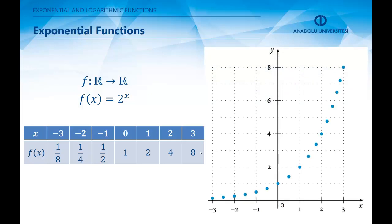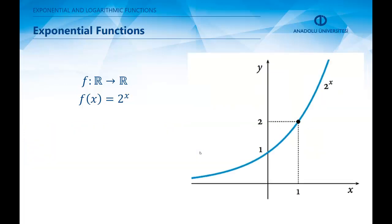For negative exponents, like x = -1, -2, and -3, we see that the function's value approaches 0. If we now plot all these points in the plane, we get the graph of the exponential function 2^x. Here, a = 2, which is greater than 1, so this is an increasing function.